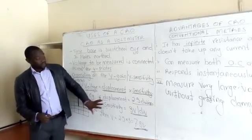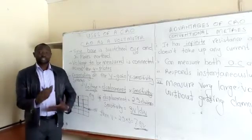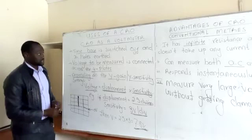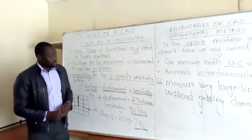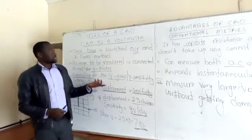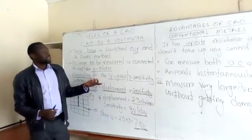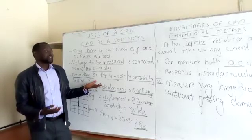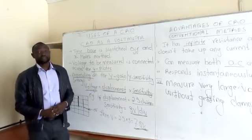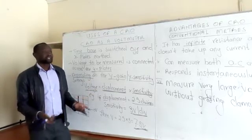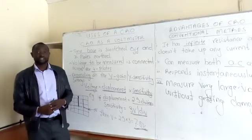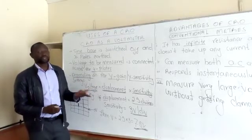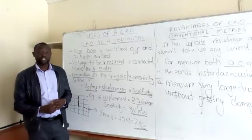We'll look at that when we do more examples on these calculations. We also need to look at why we use the CRO as a voltmeter — what are the advantages of using the CRO as a voltmeter compared to using the conventional meters.